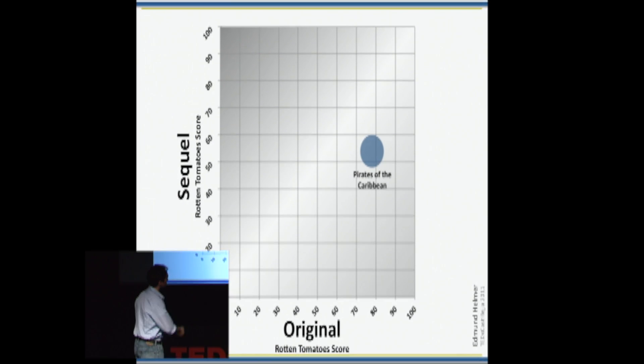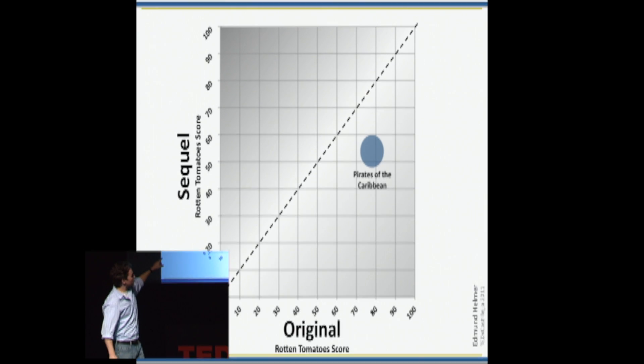If you're having trouble seeing that immediately, just think of this line. Anything to the right is where the original was better liked. Anything to the left is where the sequel was better liked. So if you look at all movies, and you put them all up there at once, do you think there would be more to the right or the left? Let's have a look. This is 259 movies, just about every movie that had a sequel in the last 30 years.